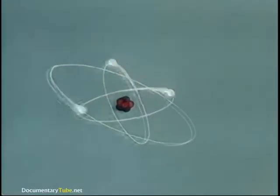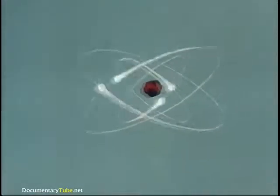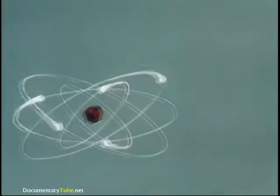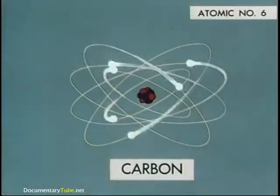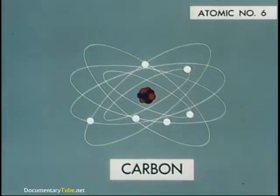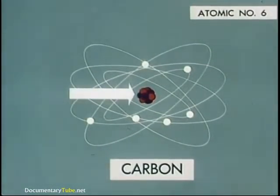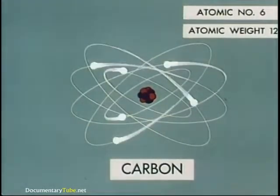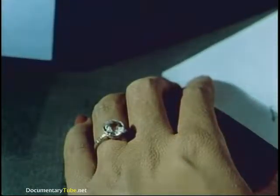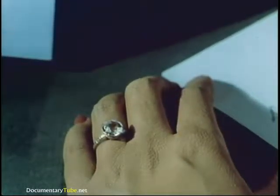Going up the ladder, we find elements with atoms that become progressively complicated, with more electrons and increased numbers of protons and neutrons in their nuclei. For example, a neutral carbon atom with an atomic number of six has six electrons. In the nucleus are six protons plus six neutrons, so the atomic weight is twelve. Carbon exists in many forms, high and humble, as diamonds and pencil points.